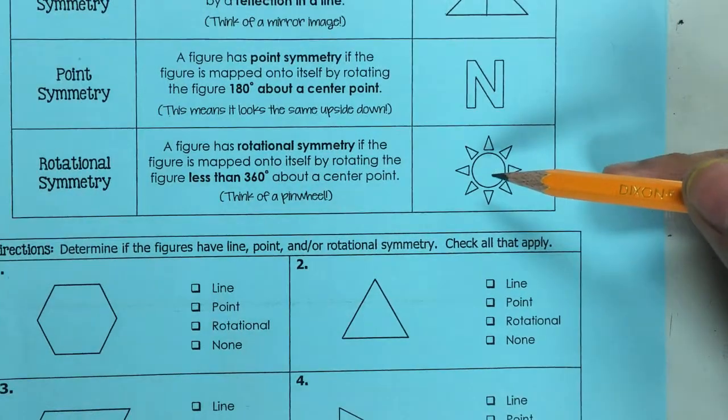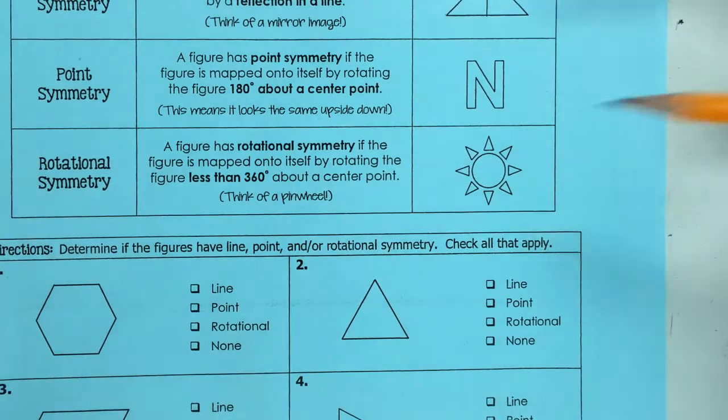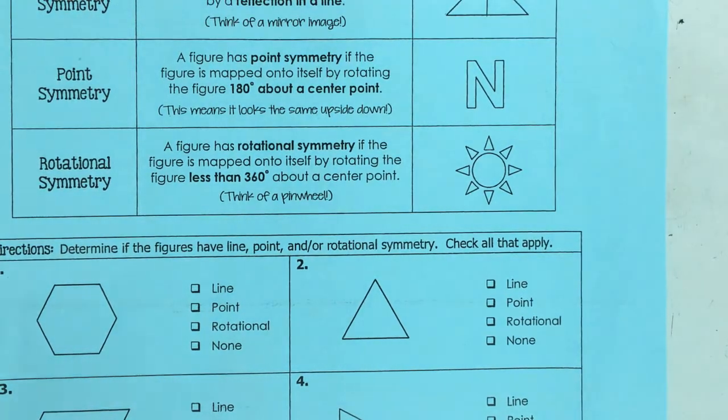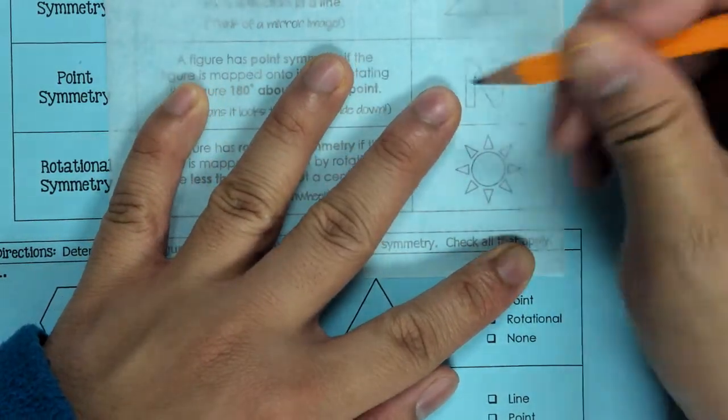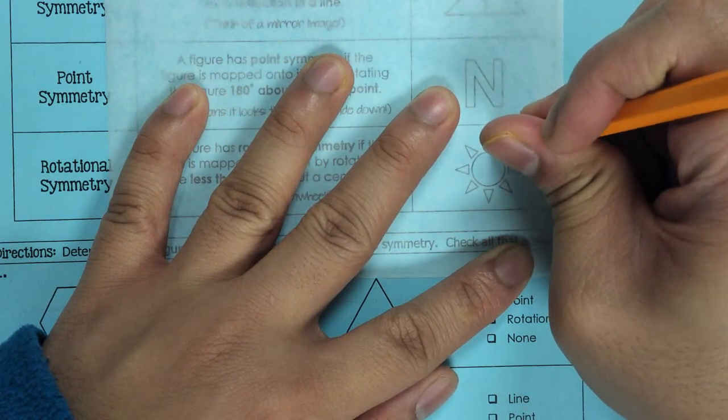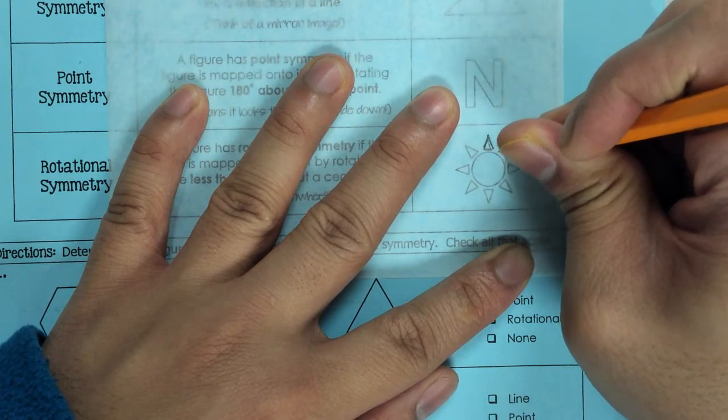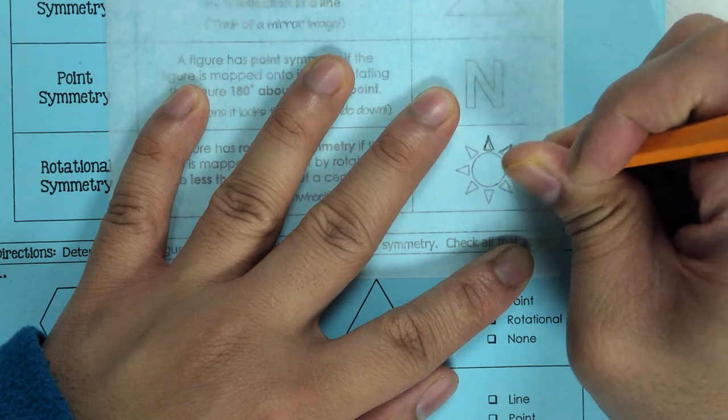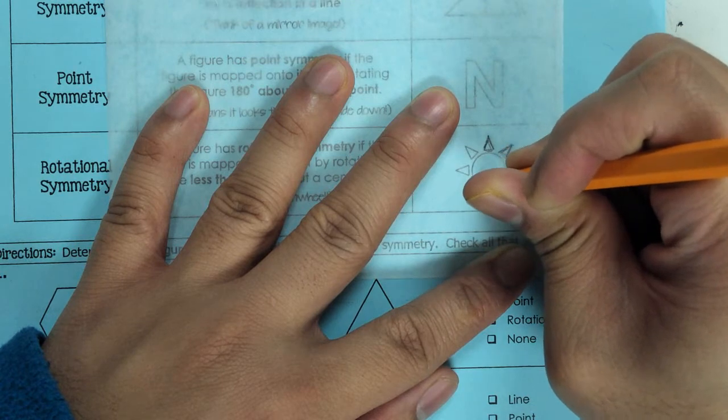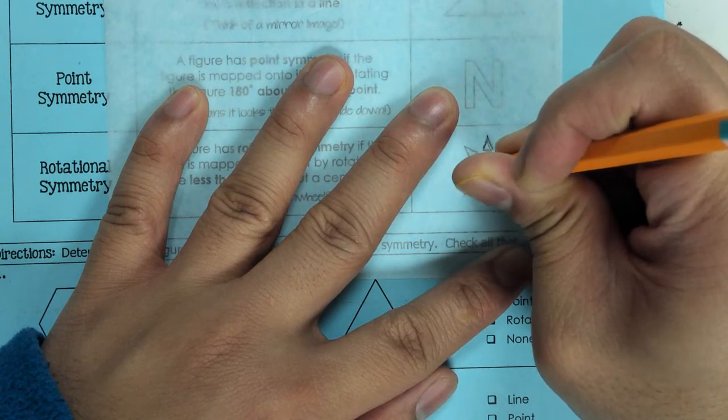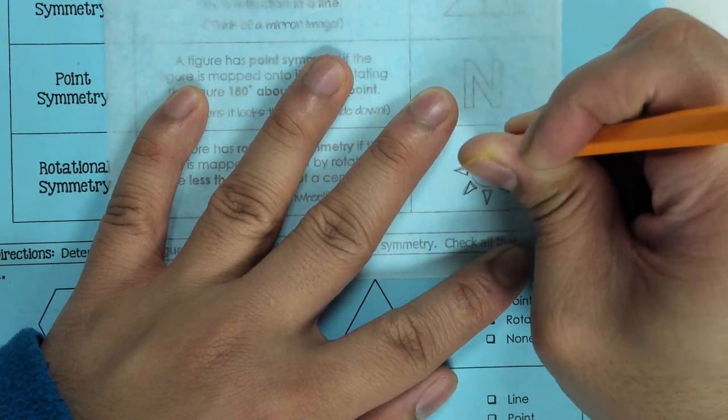Next, rotational symmetry is how many degrees can I rotate this so that it lands back on top of itself? Alright, so let me do a quick tracing of this figure to show you rotational symmetry.